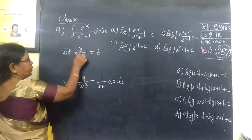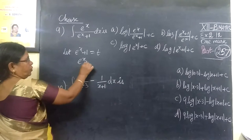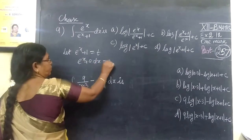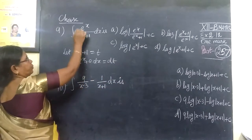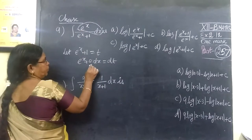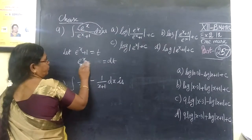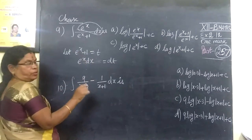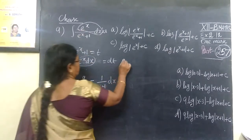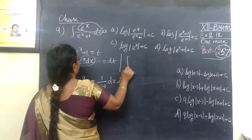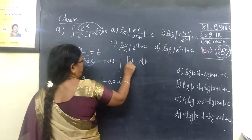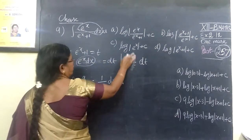Then we differentiate. e power x plus 1 equal to t. So dx is equal to dt. Then we substitute e power x with dt. The integral becomes equal to dt. Then 1 is equal to the integral which is equal to dt.